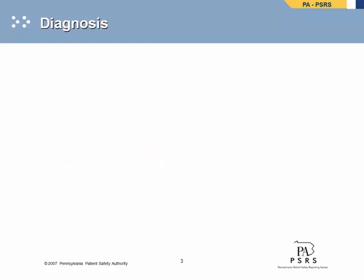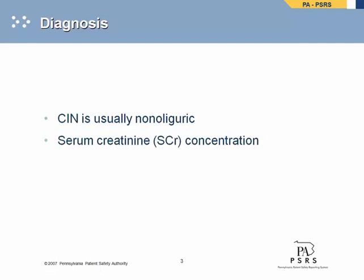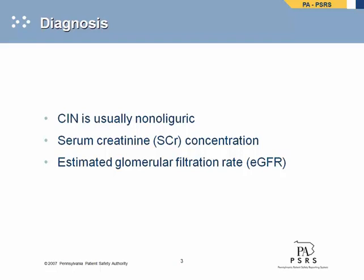CIN usually is non-oliguric, so urine production may not decrease. Generally, physicians diagnose CIN by comparing SCR concentration before and after contrast administration. However, SCR is not necessarily an accurate reflection of true renal function because it is affected by several factors, such as the patient's muscle mass. Moreover, the glomerular filtration rate, or GFR, can be reduced by more than 50% before an SCR elevation occurs because of the non-linear relationship between SCR and GFR. Because of this, and the fact that SCR is not measured routinely, cases of CIN may be overlooked and underreported.